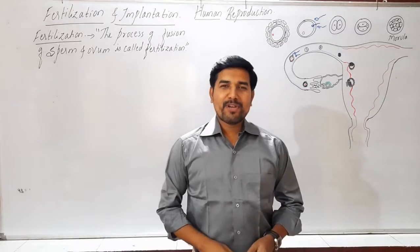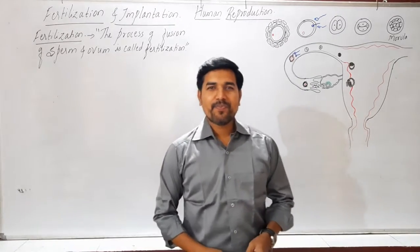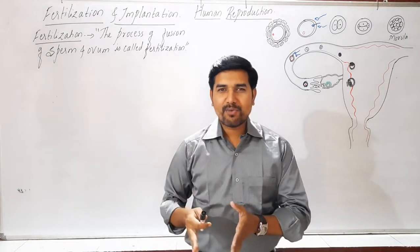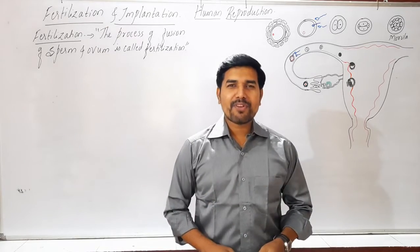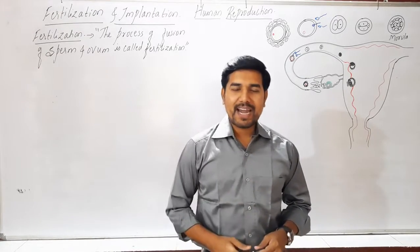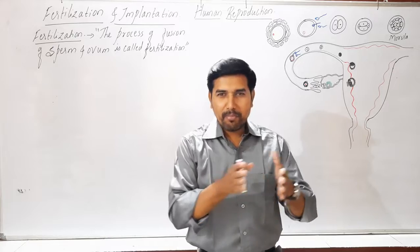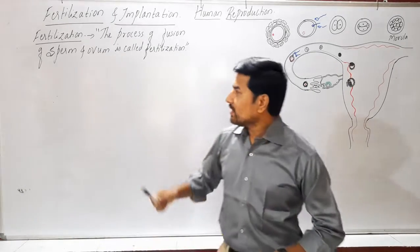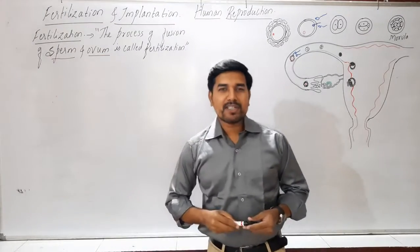Hello everyone, today we are going to continue the next part of human reproduction, titled fertilization and implantation. First we will see what fertilization is and what exactly occurs during the process of fertilization. In the second part we will see what exactly implantation is. Fertilization occurs after the formation of the gametes at the pubertal phase, at sexual maturity. The general definition of fertilization is the fusion of both male and female gametes — when a sperm fuses with the ovum, the process is called fertilization.